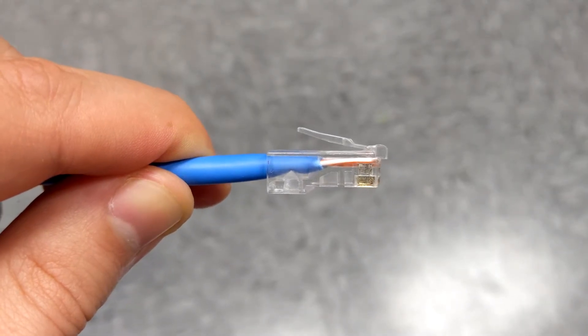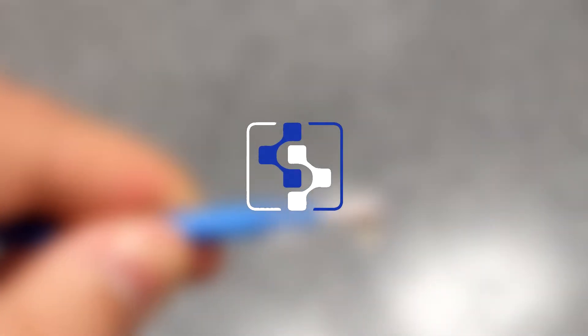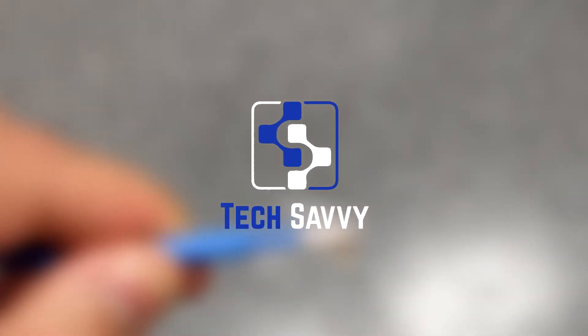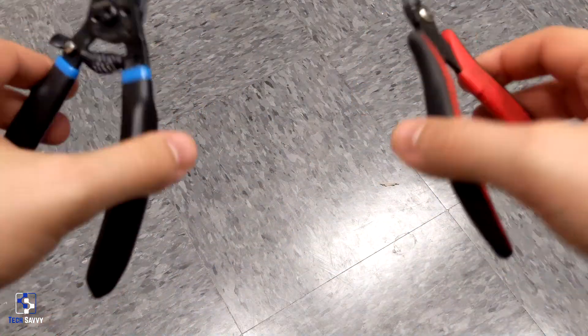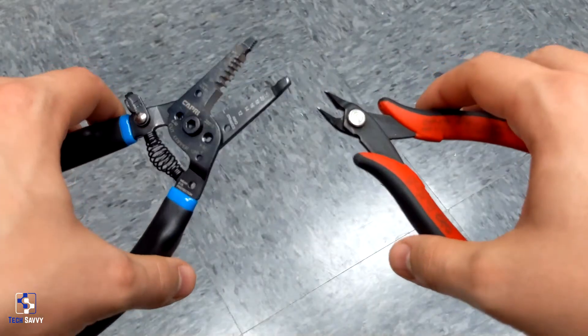In today's video I'm going to show you how to make your own CAT6 cable. Before we get started we need to grab some tools. You're going to need something that will cut small wires precisely.